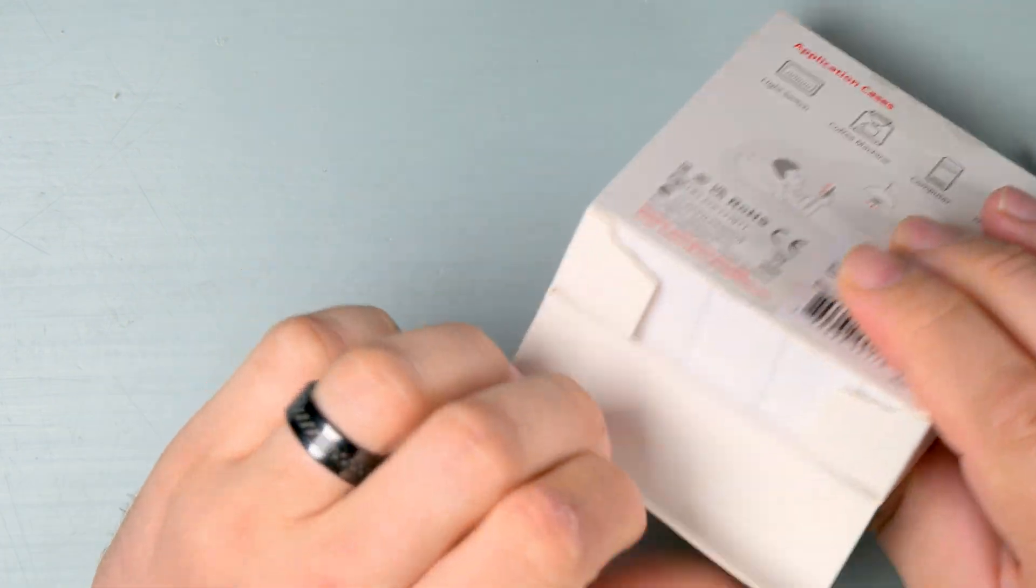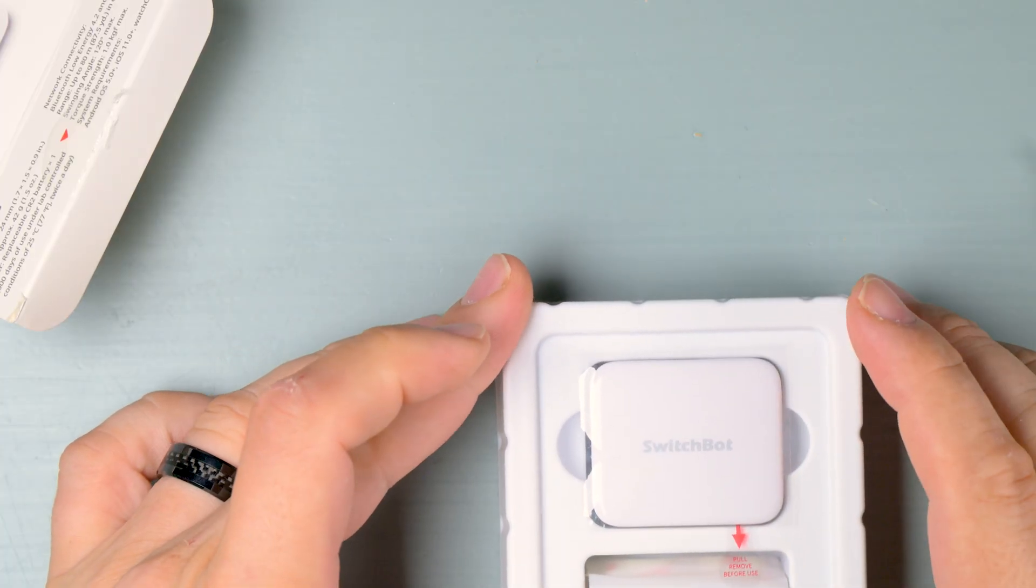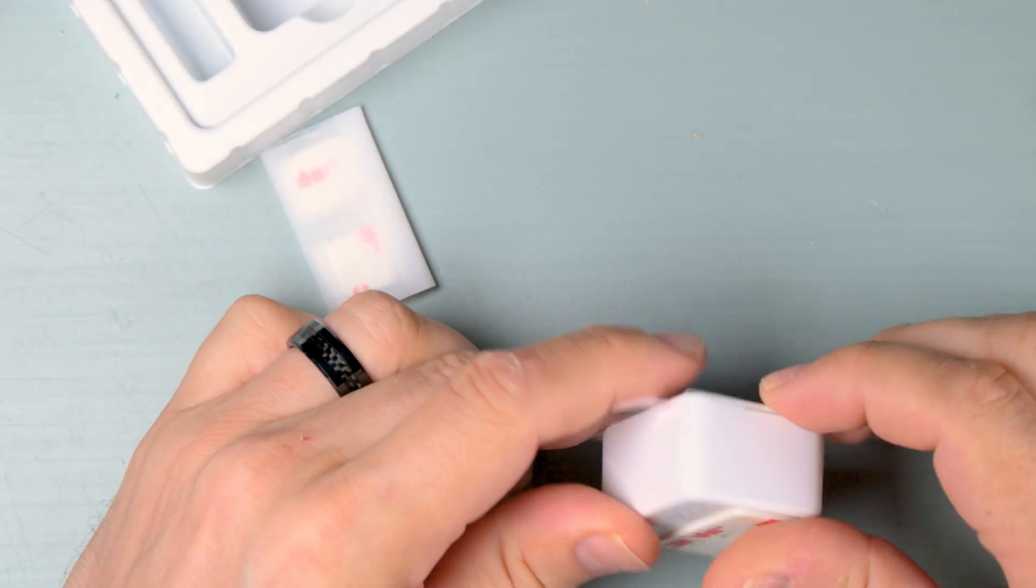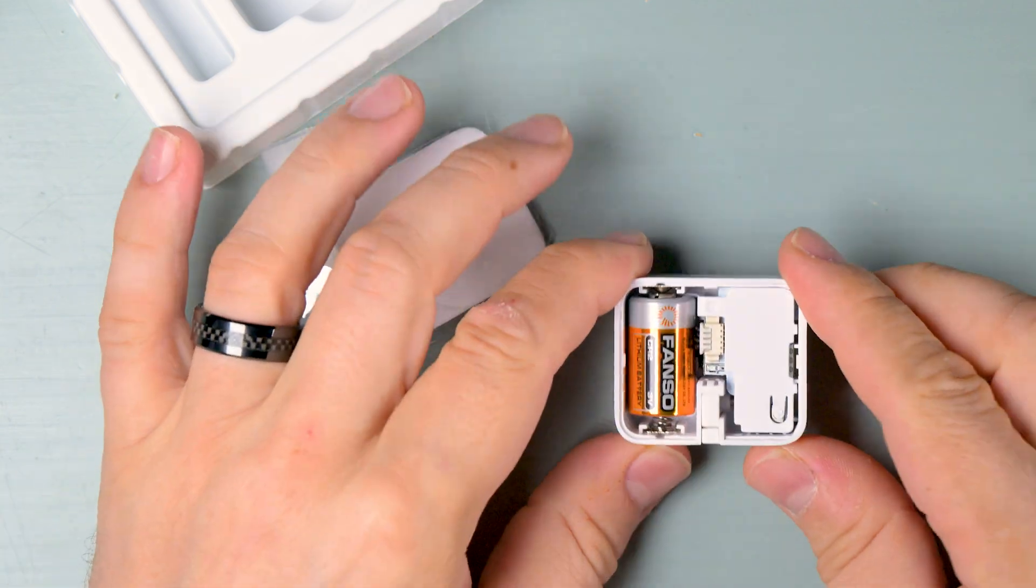For electronics, I went with a SwitchBot. It's a tiny gadget that makes regular switches smart. It's SmartThings compatible and has a moving arm, so I just had to figure out how to mount it on top of the vent. Unboxing and tearing it down was simple.